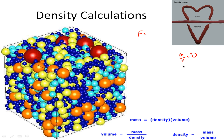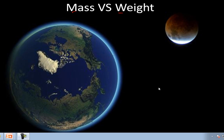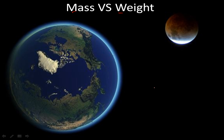I want to talk to you guys a little bit about each of these variables — mass and volume — in a little bit more detail. So let's talk about what the difference between mass and weight is. Mass is basically the amount of stuff something contains, and weight is the amount of pull gravity has on an object.